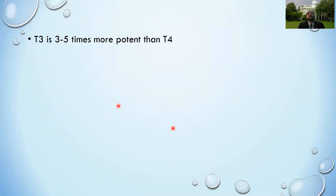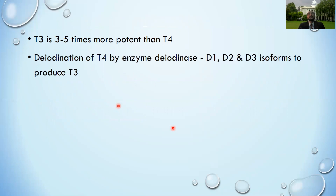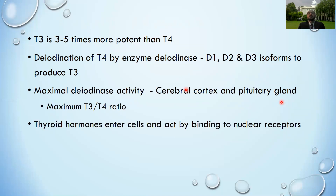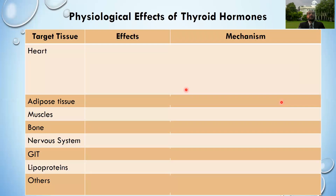T3 is three to five times more potent than T4. Deiodination of T4 by deiodinase enzymes (D1, D2, D3) into T3 leads to the effect of thyroid hormone. The activity of these deiodinases varies among different tissues and at different physiological periods - for example, maximum activity is seen in the cerebral cortex and pituitary gland where thyroid hormone is needed most. Reverse T3 is generally an inert hormone.